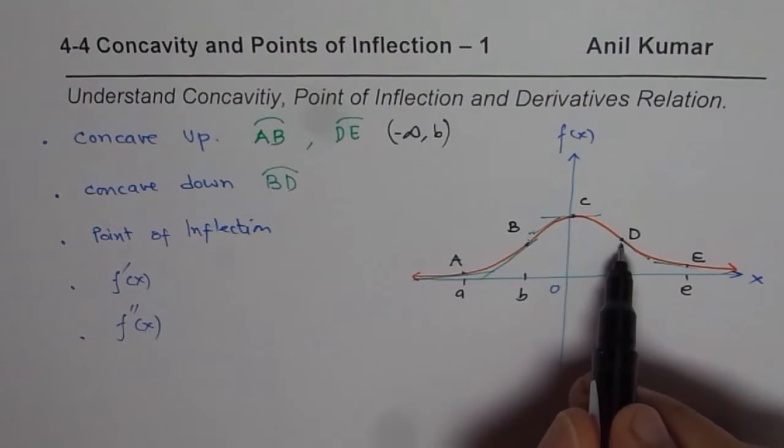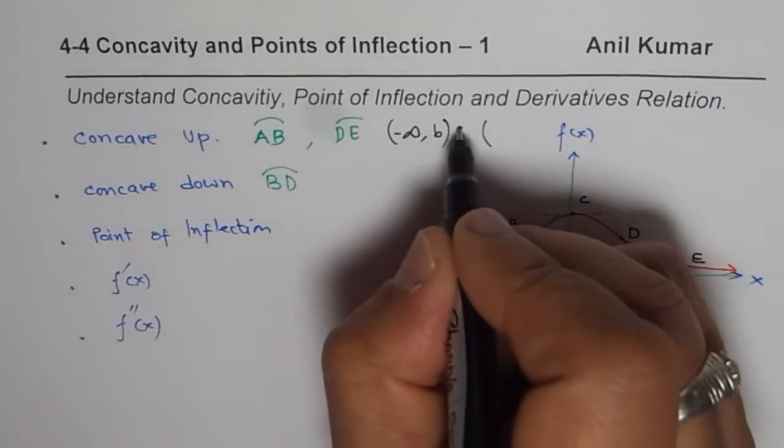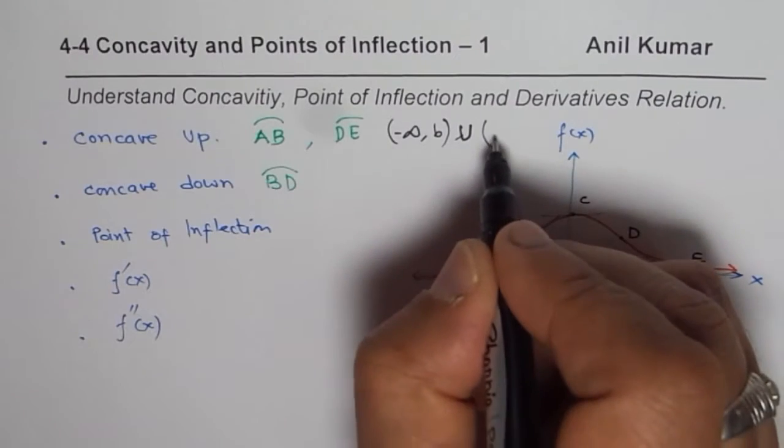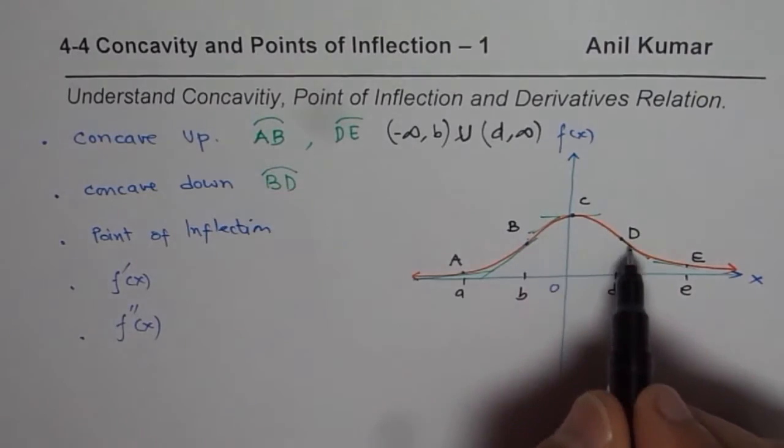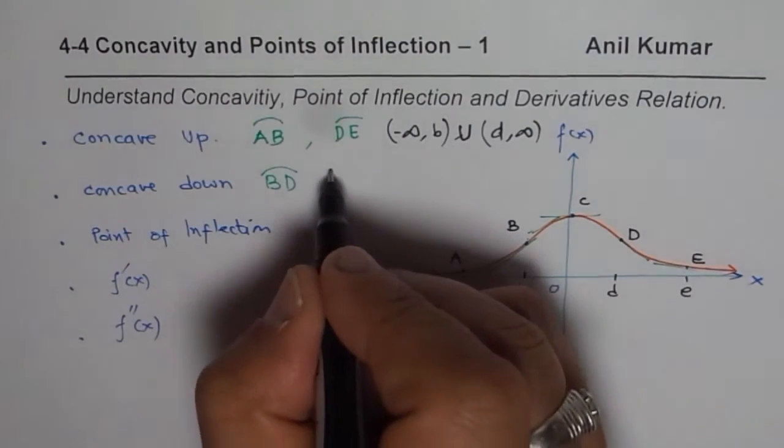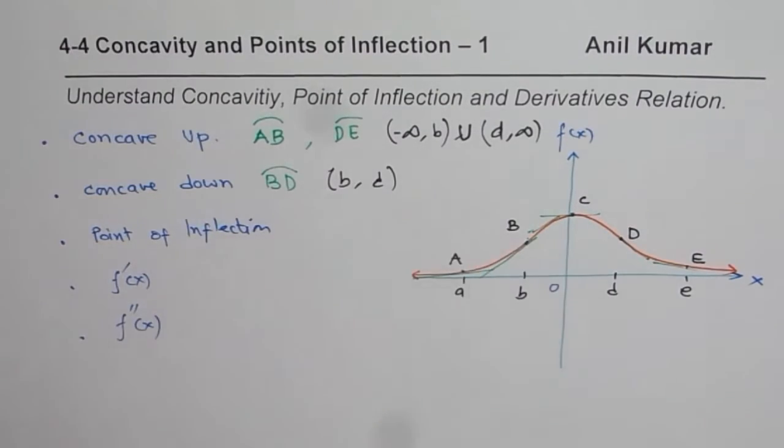And from d to plus infinity and from, you could say, union. Union from d to plus infinity. It is concave up. And it is concave down from b to d. So we will say from b to d. That is concave down.